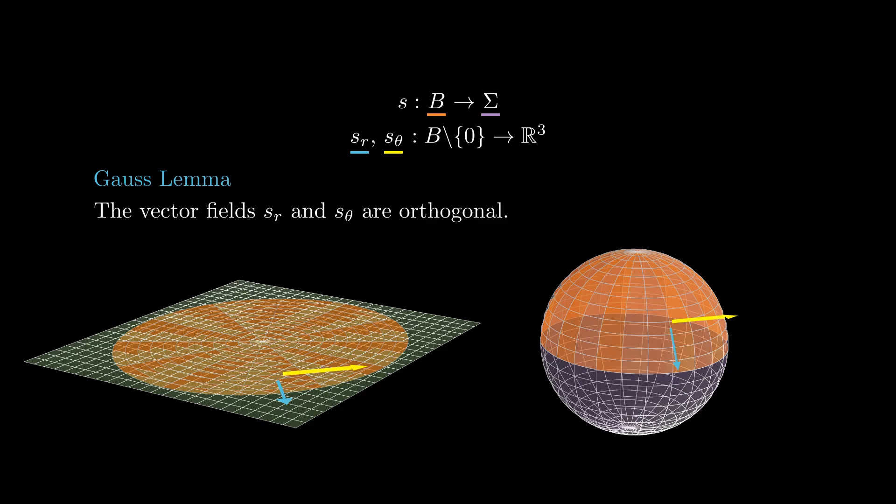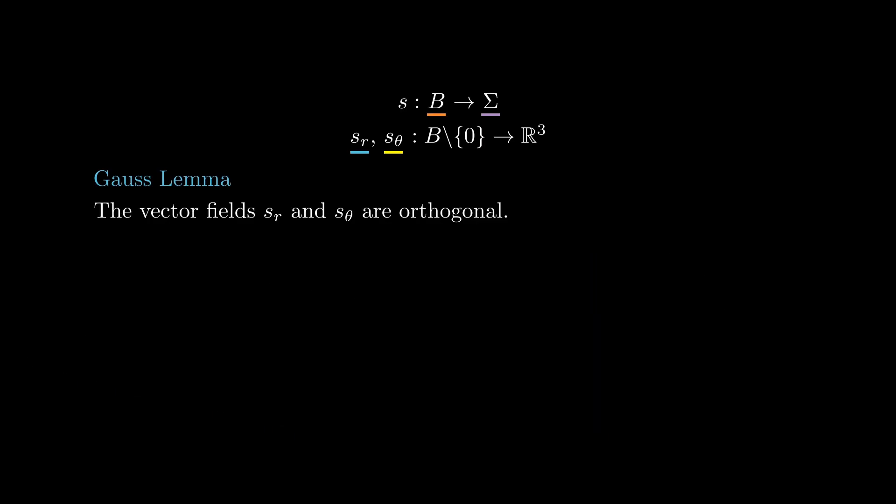First thing we proved today is the Gauss Lemma, which states that these two vector fields are orthogonal. To prove it, use the product rule to deduce from the fact that sr dot sr is constant that sr theta is orthogonal to sr. Then, the derivative with respect to r of the dot product between sr and s theta is the product between sr and s theta plus the product between sr and s theta r. From the fact that the theta lines are geodesics, the first term is 0 and from our above observation, the second term is also 0. This implies that the product sr times s theta does not depend on r. Finally, we know that the limit of s theta as r goes to 0 is 0, so the product sr times s theta is 0 for all r.